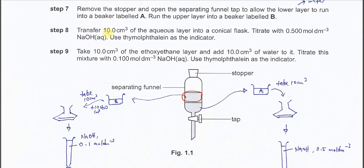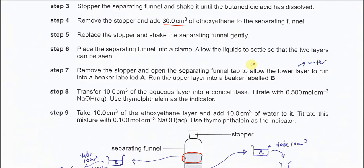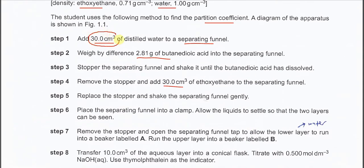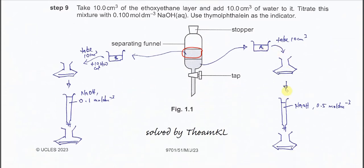Steps 8 and 9 involve titration. In step 8, transfer 10 cm³ of the aqueous layer into a conical flask and titrate with 0.5 mol/dm³ sodium hydroxide, using thymolphthalein as the indicator. From beaker A, which contains roughly 30 cm³, we take just 10 cm³ for the titration. The acid in the aqueous solution is titrated against sodium hydroxide.